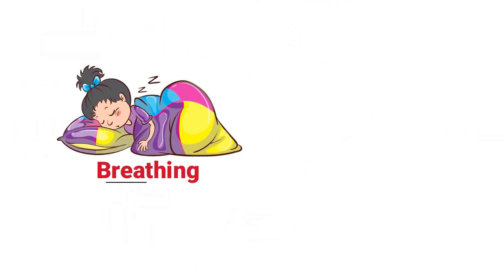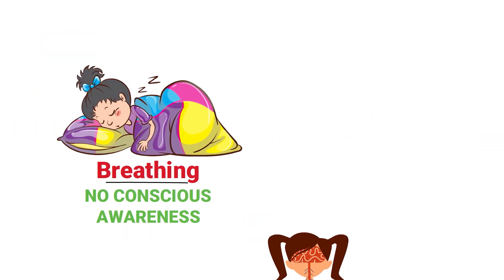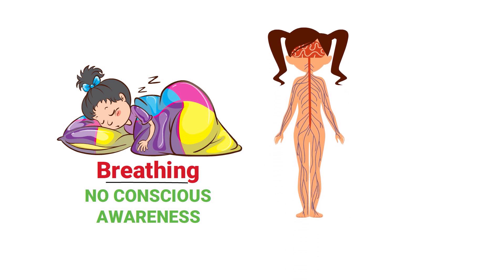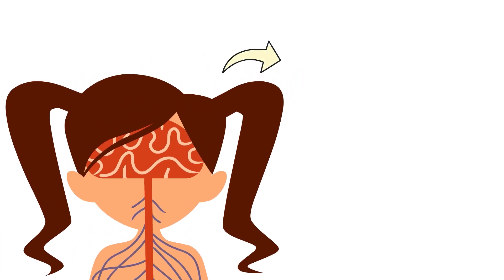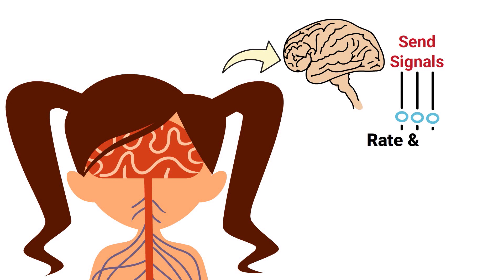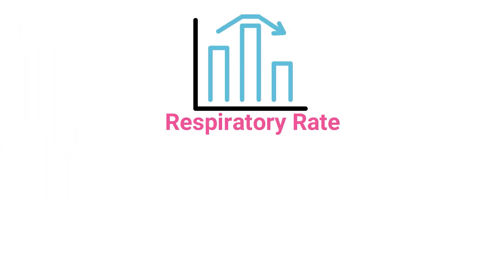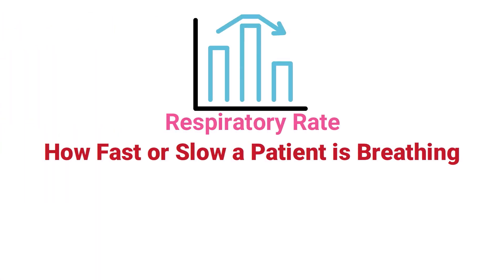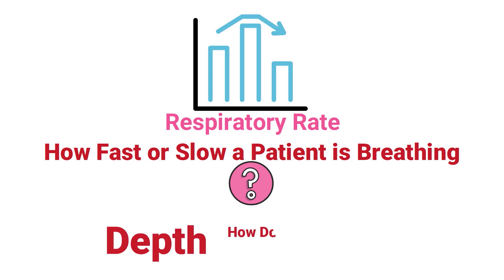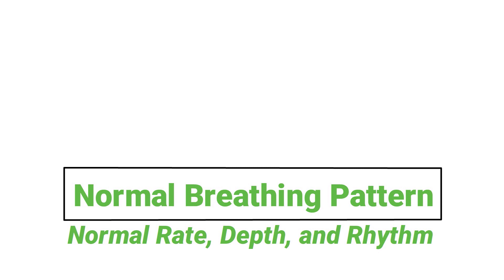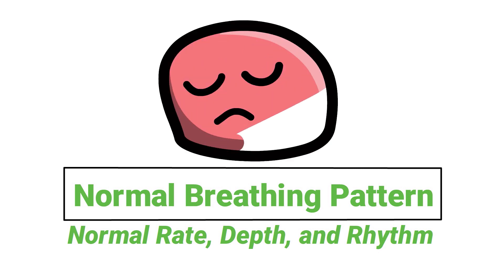Breathing is a phenomenon that occurs automatically with no conscious awareness, thanks to the autonomic nervous system. Structures within the brain send signals that control the rate and depth of breathing to meet the ventilatory needs of the body. Looking at the respiratory rate tells us how fast or slow a patient is breathing, and looking at the depth tells us how deep or shallow a patient is breathing. Ideally every patient would have a normal breathing pattern with a normal rate, depth, and rhythm — unfortunately, as you know, this isn't always the case.